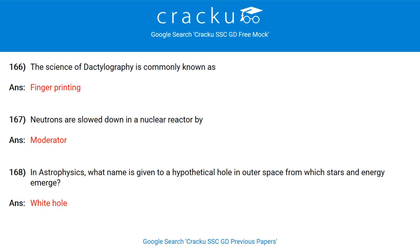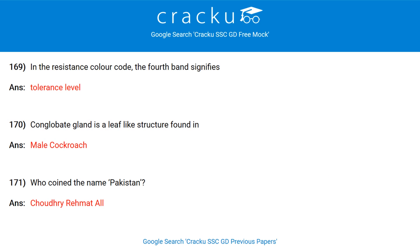An element of atomic number 29 belongs to the D-block. The science of dactylography is commonly known as fingerprinting. Neutrons are slowed down in a nuclear reactor by the moderator. In astrophysics, what name is given to a hypothetical hole in outer space from which stars and energy emerge? White hole. In the resistance colour code, the fourth band signifies the tolerance level. Conglobate gland is a leaf-like structure found in the male cockroach.